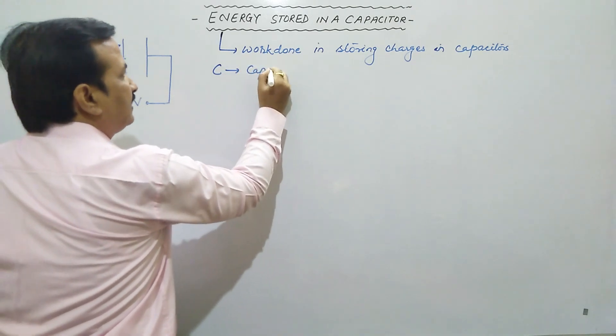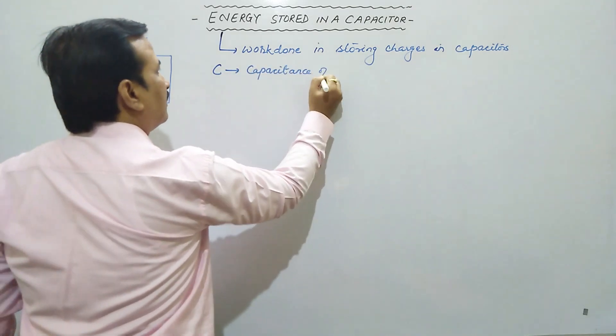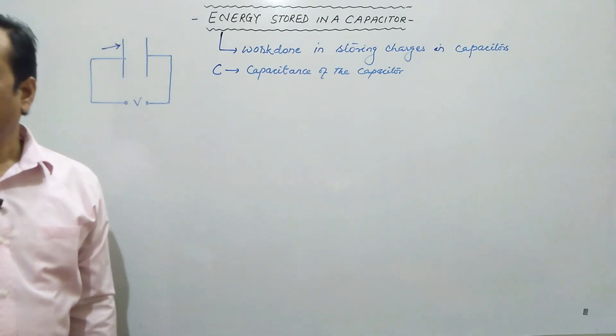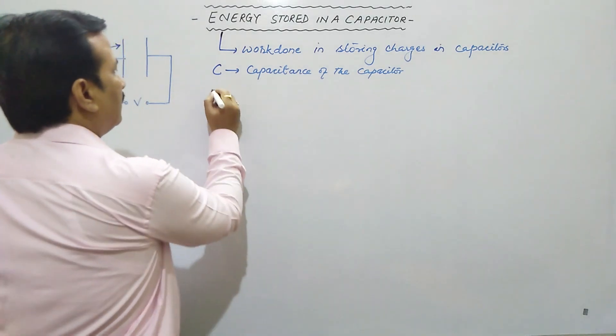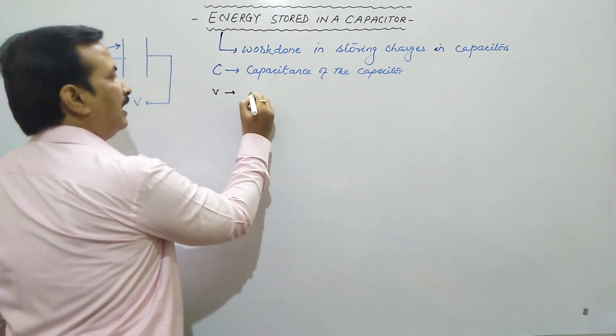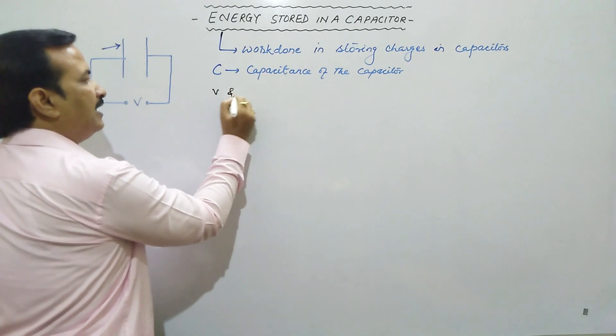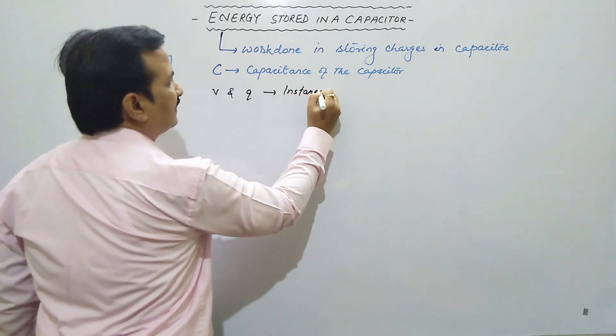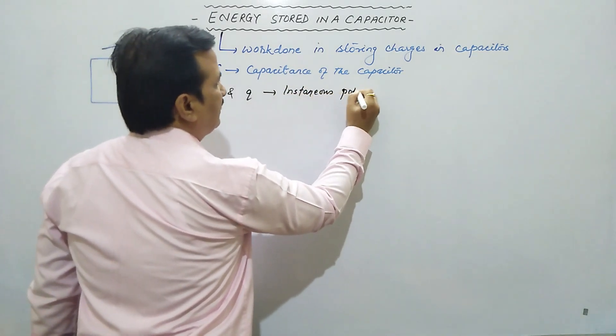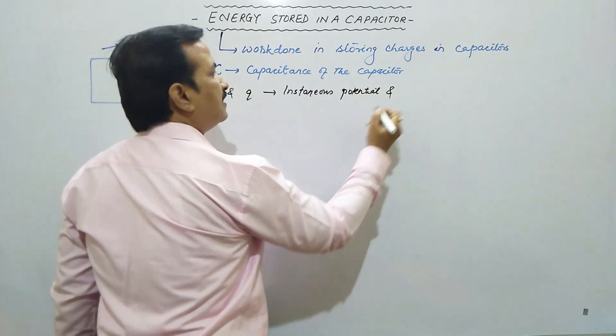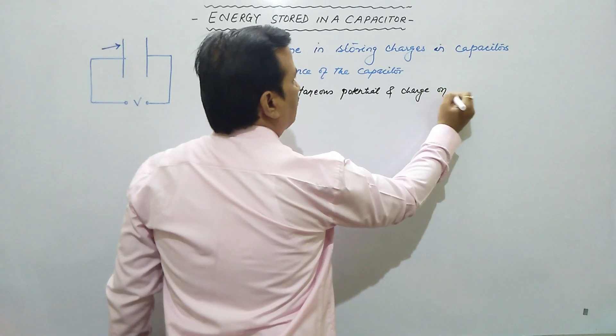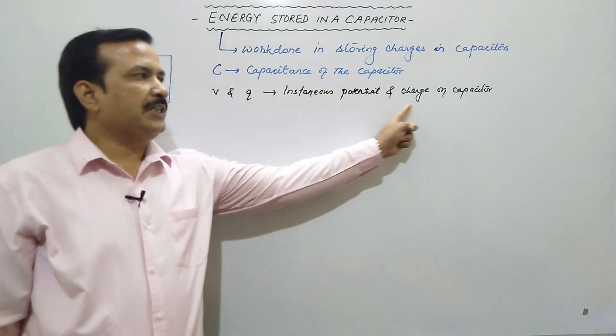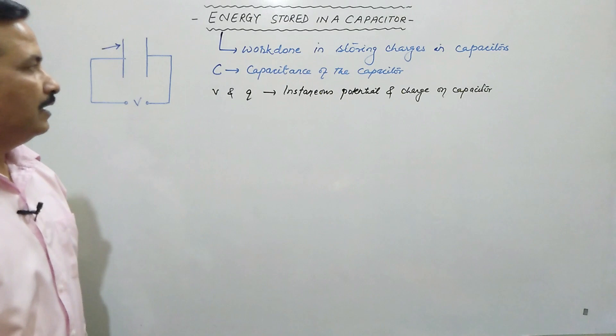Now suppose if we take V and Q be the instantaneous potential and charge on capacitor. V or Q instantaneous potential or charge on the capacitor.